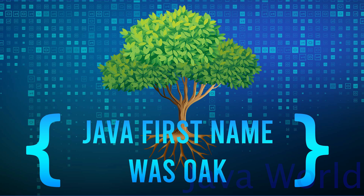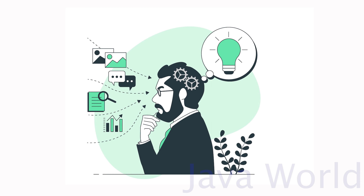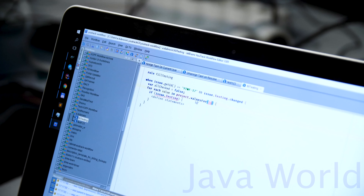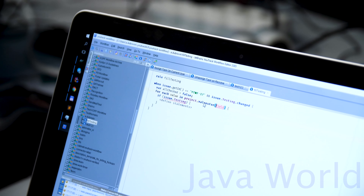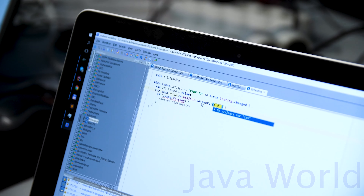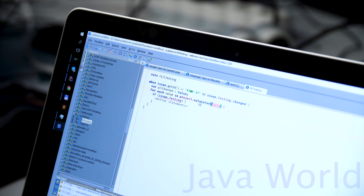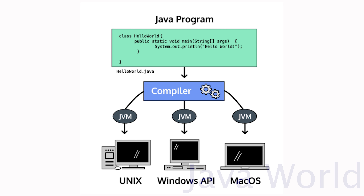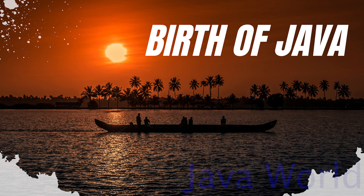The name Oak was used by Gosling after an oak tree that remained outside his office. One day while working there, Gosling encountered a problem when he needed to write a program to translate software code from one language to another. To fix the problem, Gosling and the team created a new programming language that could be written once and run anywhere. Thus, Java and the JVM were born.